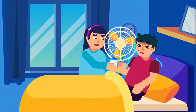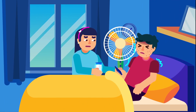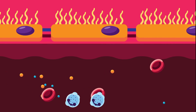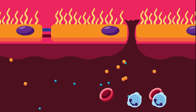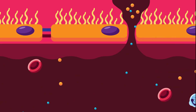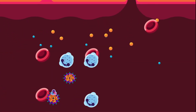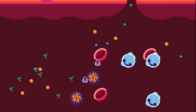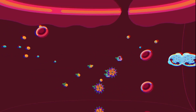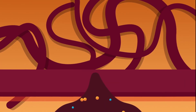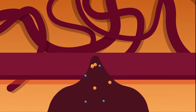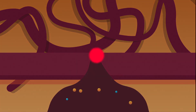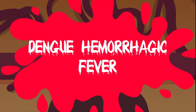In some cases, however, symptoms can worsen and become life-threatening. Blood vessels become affected adversely and eventually get leaky. The clot-forming platelets in the blood decrease in number, which leads to increased susceptibility of the patient to bleed. This condition is known as severe Dengue, or Dengue Hemorrhagic Fever.